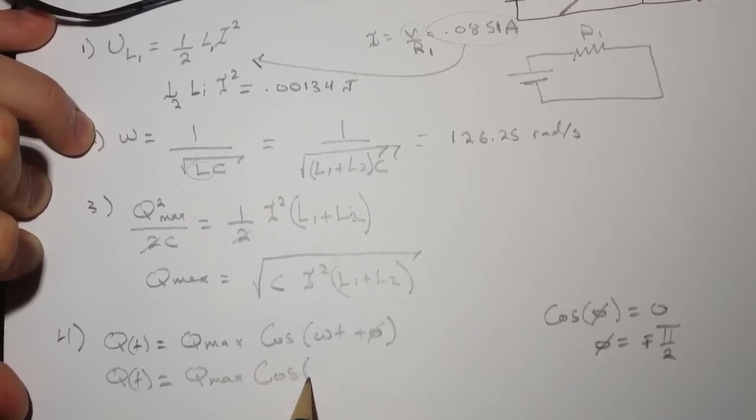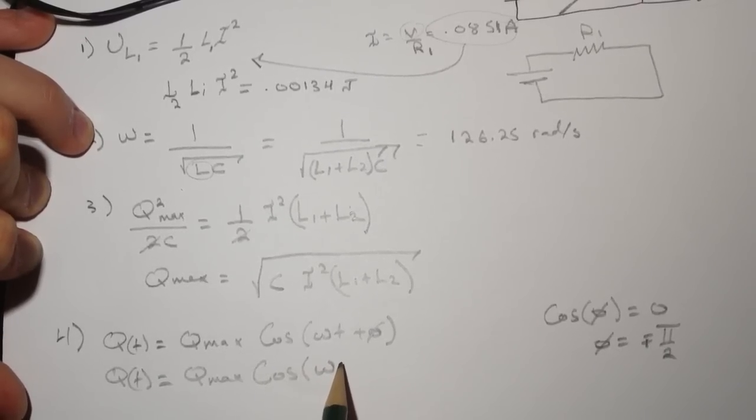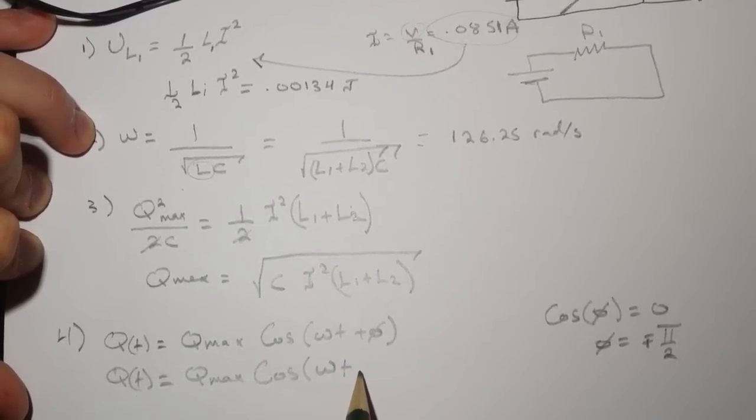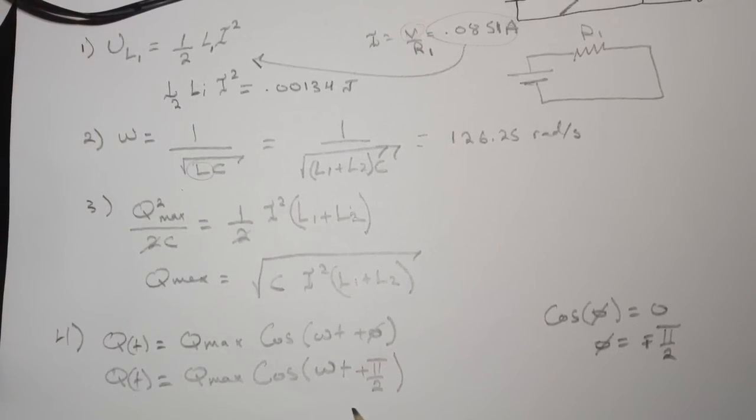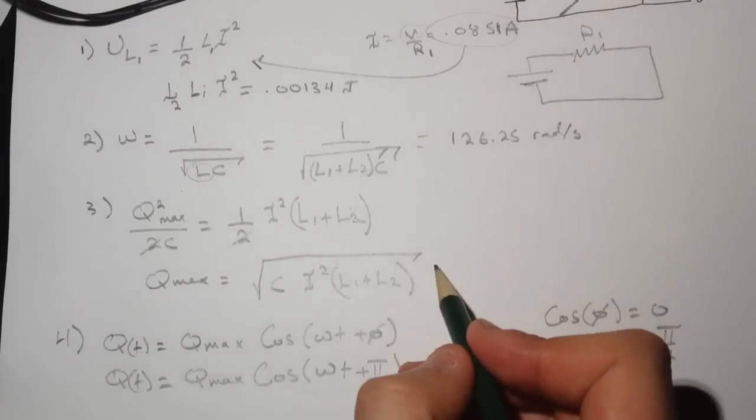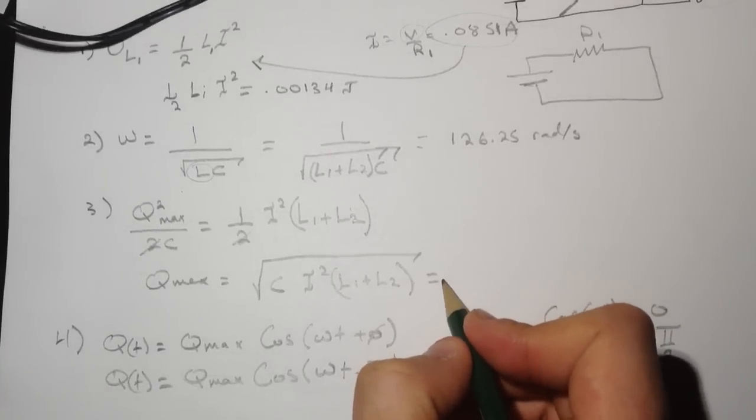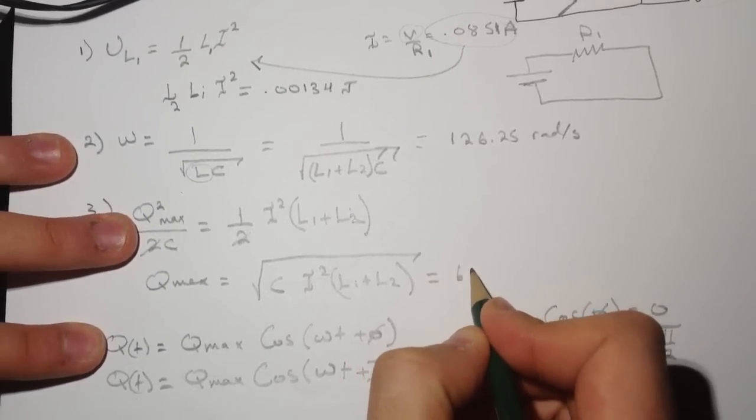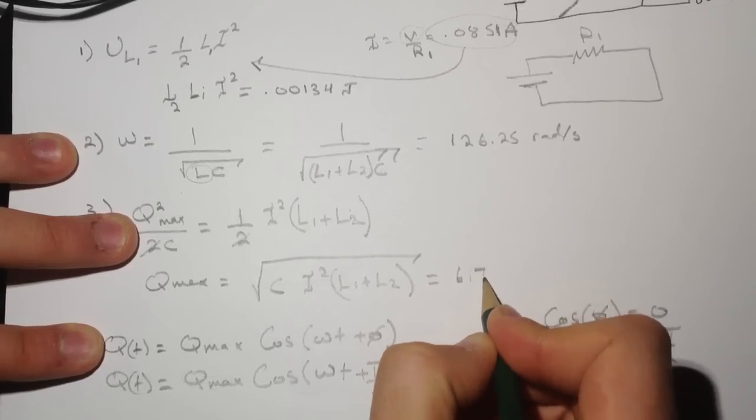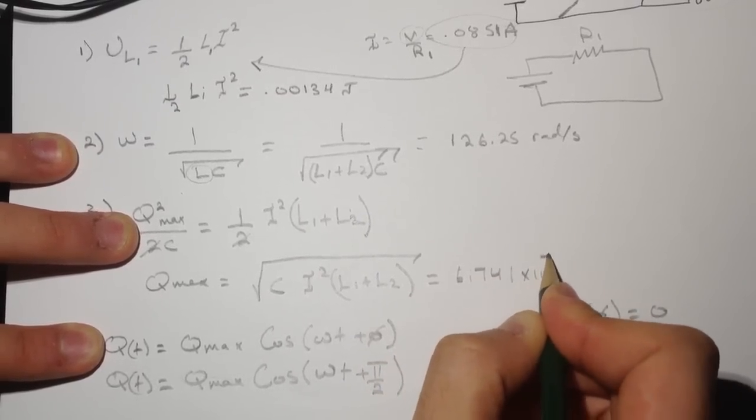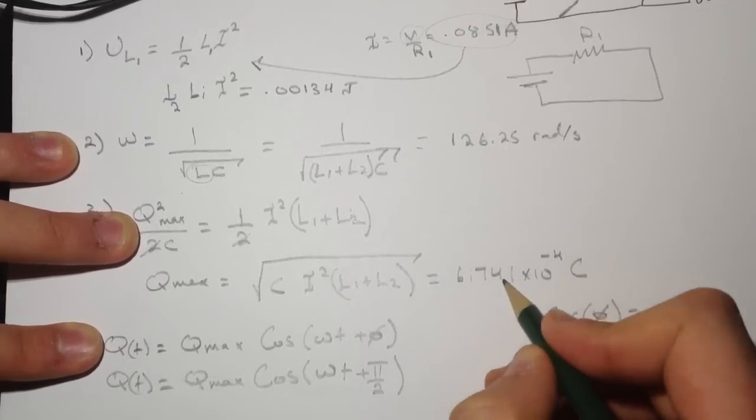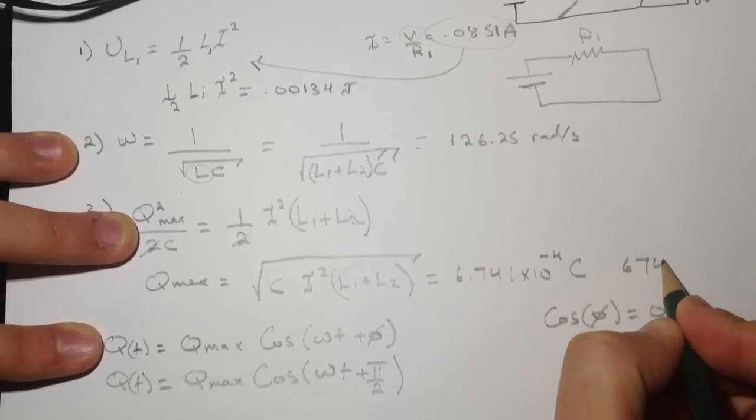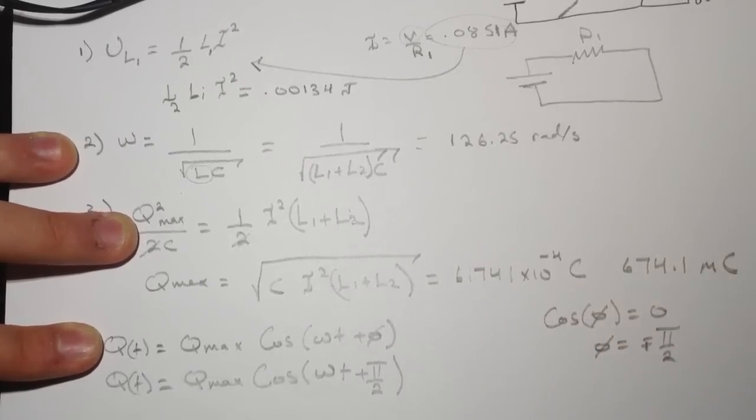So Q_max cosine, and then you have the omega, and they're asking about the time—what's the charge at the time that they gave us? We have the time, and then plus phi over 2. Then just substitute everything you have in this. You have the Q_max from the one before. For this one I got it was 6.741 times 10 to the power negative 4, and it is in micro coulomb in the question. This is in coulomb, so this in micro coulomb will be 674.1 micro coulomb.